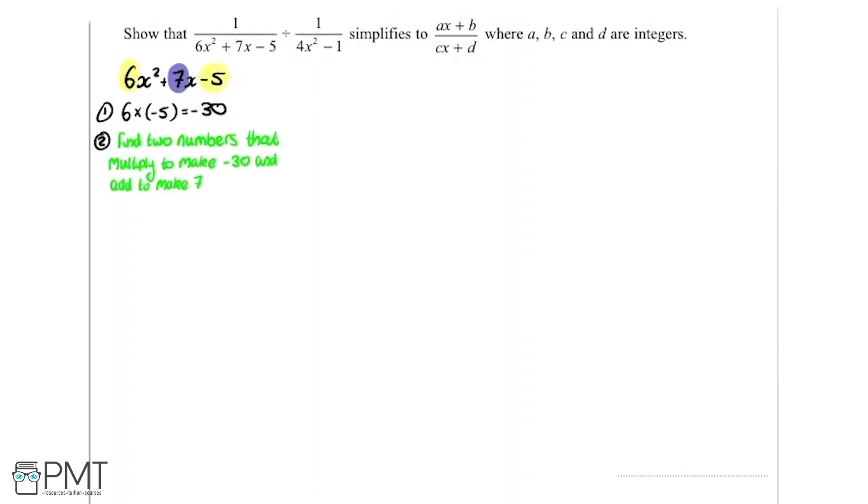So in this case the two numbers that will work are 10 and minus 3. So if we do 10 multiplied by minus 3 we get minus 30. So that's perfect.